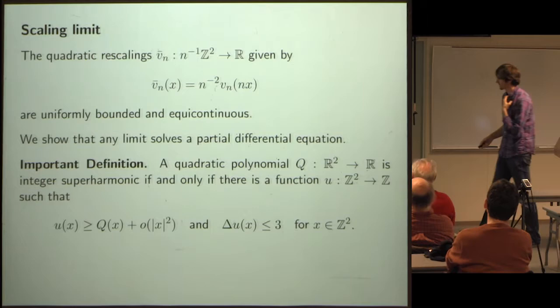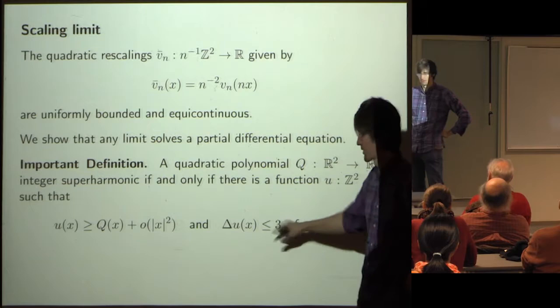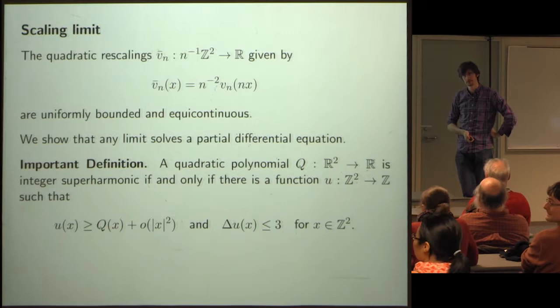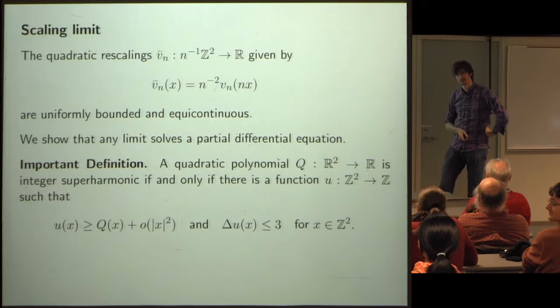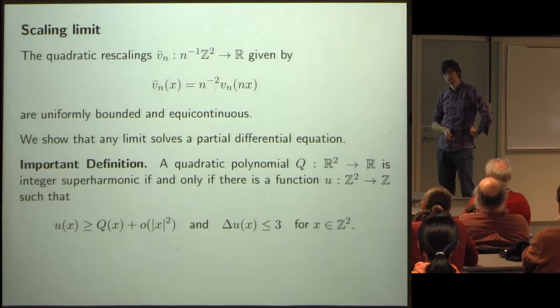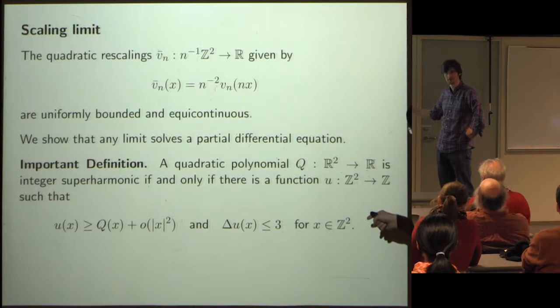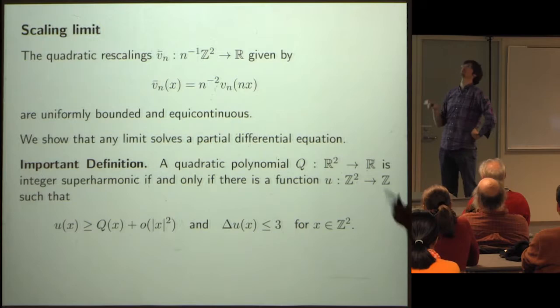Why use 3? Because this comes from the sandpile model: you topple if you have four chips (equal to the number of neighbors). An audience member asks about the triangular lattice — you'd obviously have to change the numbers. The speaker confirms: you can write down the same definition on the triangular lattice, and will give answers for the square lattice, the hexagonal lattice, and a few others.